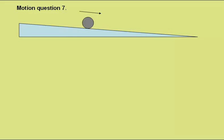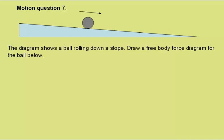Motion Question 7. The diagram shows a ball rolling down a slope. Draw a free body force diagram for the ball below.